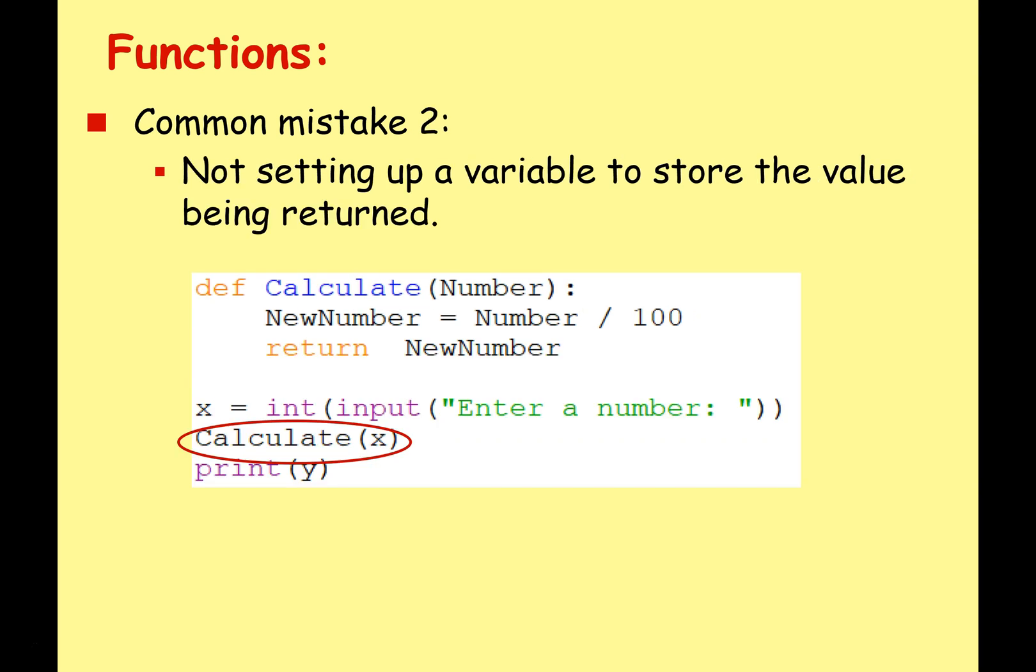The other mistake is not setting up a variable to store the value being returned. So my subroutine here is fine, I've got my return NewNumber here, but when I send this back, oh I'm not keeping it, it just disappears into the ether. So when I say print y, well there is no y to print.